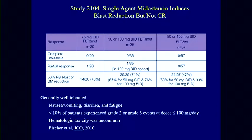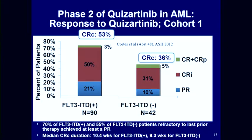Partial remission in leukemia means reducing leukemia burden significantly while normal hematopoiesis recovers. The single-agent midostaurin data was more active in the mutant cases, as expected, and was generally well tolerated with some nausea and vomiting and minimal hematologic toxicity. Quizartinib, the more potent and specific inhibitor, had a remission rate of 53%, but very few complete remissions — most were CRp or CRi with blast reduction. There's an attempt to get quizartinib approved as a single agent in relapsed AML.